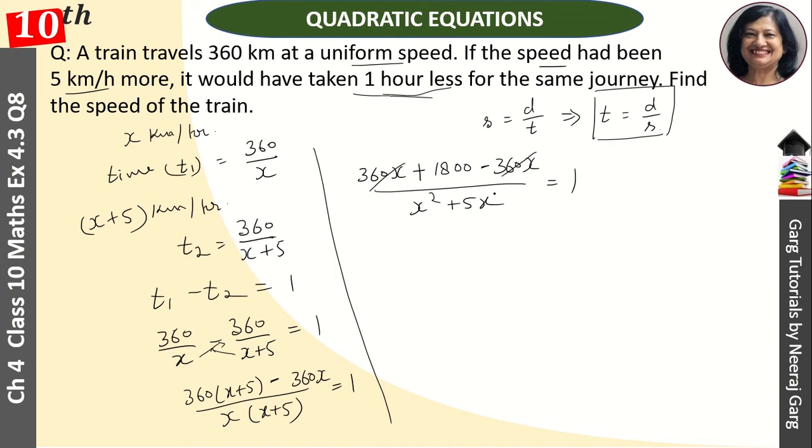Look, this is cancelled. We will cross multiply. 1800 is equal to x square plus 5x. So, 0 is equal to x square plus 5x minus 1800.